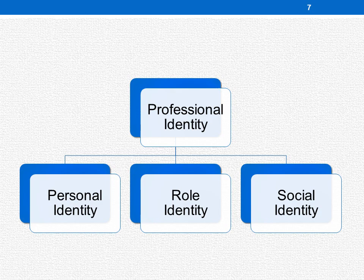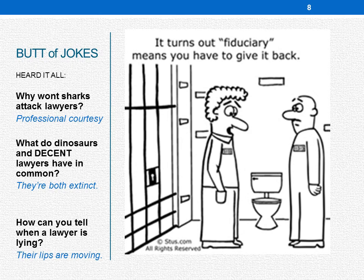You also need to have an understanding of your role identity — your professional functions, the activities and responsibilities that actually belong to the legal profession. In addition to that, having a social identity: what is the place of lawyering in society, the collective commitment within the whole legal profession to values and goals. Your view on all of those things really culminates in your own professional identity — it's not just one factor, but all those factors coming together.